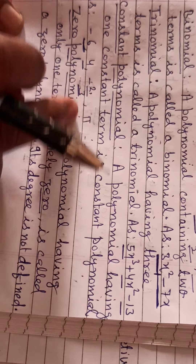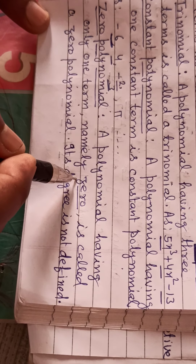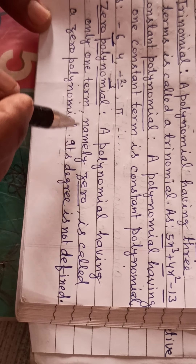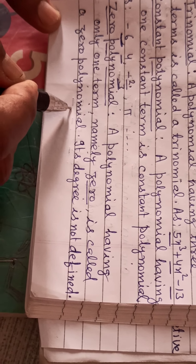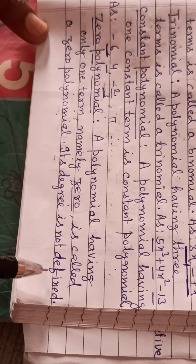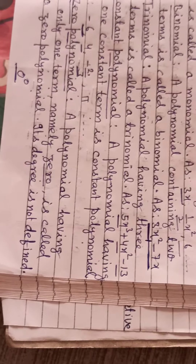Zero polynomial: a polynomial having only one term, namely zero, is called a zero polynomial. Its degree is not defined — we cannot determine zero to the power zero, as it is not defined.